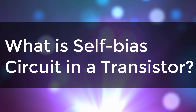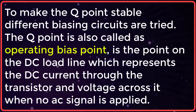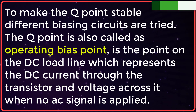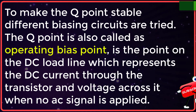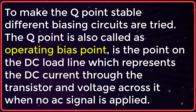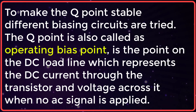What is a self-biased circuit in a transistor? To make the Q point stable, different biasing circuits are tried. The Q point is also called the operating bias point, and is a point on the DC load line. A load line is a graph of output current vs. output voltage in any of the transistor configurations, which basically represents the DC current through the transistor and voltage across it when no AC signal is applied.